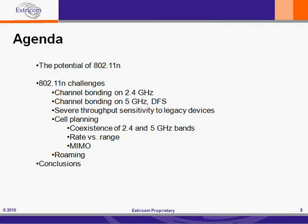First I'll talk about the potential of 802.11n, and in particular the main new features it brings to wireless LAN. Then I'll talk in detail about the challenges posed by channel bonding on both the 2.4 GHz and 5 GHz bands, the severe throughput sensitivity of 802.11n to legacy devices, cell planning challenges, rate versus range issues, MIMO issues, and roaming. Then we'll sum up.